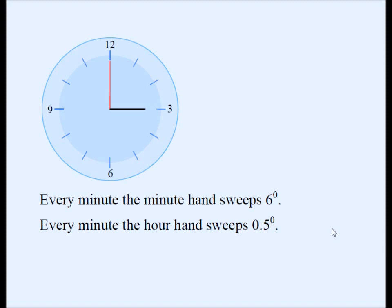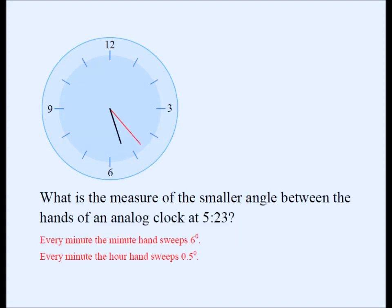Those are the two facts we need to keep straight. Every minute, the minute hand sweeps 6 degrees, and every minute the hour hand sweeps 0.5 degrees. These two facts will help us find the angle between the hands of an analog clock at any given time. Now let's calculate this angle — we can do it in a variety of ways, so let's try a unique approach.